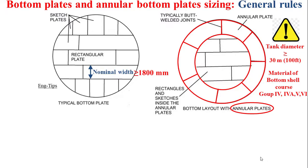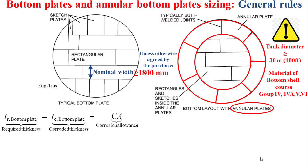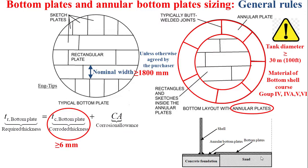As a general rule, the nominal width of both rectangular plates and sketch plates should be no less than 1800 millimeters, unless otherwise agreed by the purchaser. Also, when calculating the required thickness of bottom plates as corroded thickness plus corrosion allowance, the corroded thickness of bottom plates should be no less than 6 millimeters.